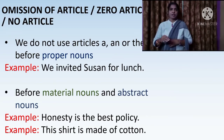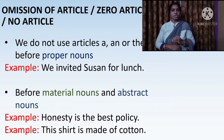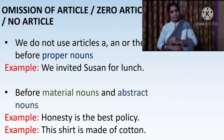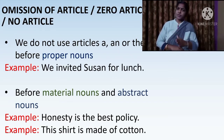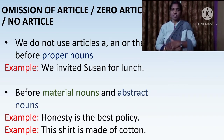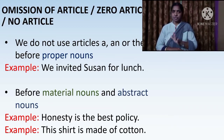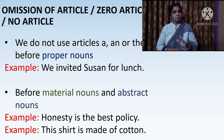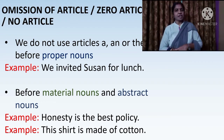Now let us learn where we don't use these articles. We don't use articles before proper nouns — maybe before persons, places or things. There are certain exceptions which we will learn as we do exercises. For example: we invited Susan for lunch. Here I did not use a, an, or the before Susan. We should never use any article before the name of a person, place or thing.